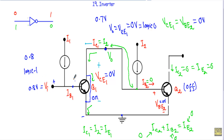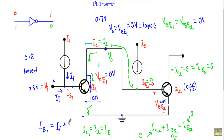So for an input of logic 1, the output is logic 0. The base current of transistor Q1 draws current from both current source I1 and voltage source VI, so I can write IB1 equals II plus I1. That is the complete operation of the I²L inverter circuit.